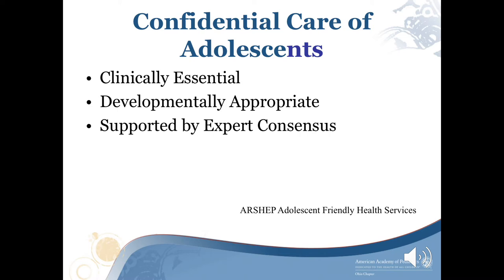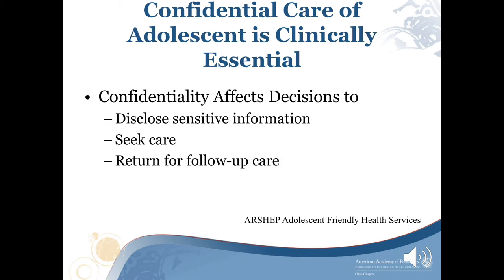Confidentiality affects adolescents' decisions to disclose sensitive information, such as sexual preferences, sexual behaviors and practices, and exposure to alcohol and drugs. Adolescents may not share this information without assurance that it will be kept private. It can also affect whether they seek care for certain conditions at all, and their decisions to return for follow-up care.